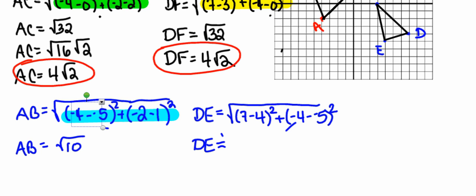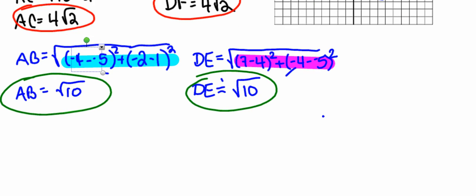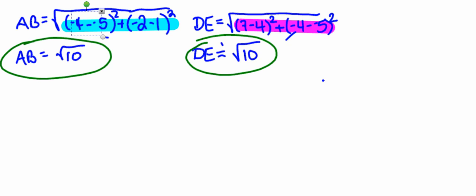Again, make life easy on yourself. Take only what's underneath the radical and punch that into your calculator. So I find that the distance between points D and E is exactly the same as the distance between points A and B. There's a second pair of congruent sides. The third thing I'm going to do is I'm going to go find distances for my third pair of sides. So I'm going to go find the distance between points B and C.